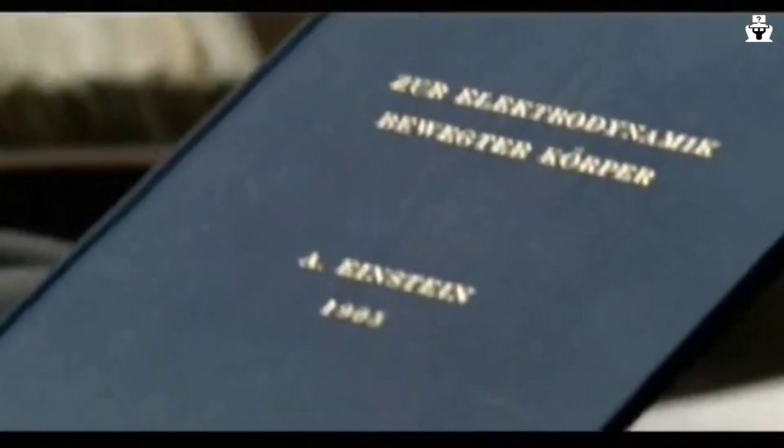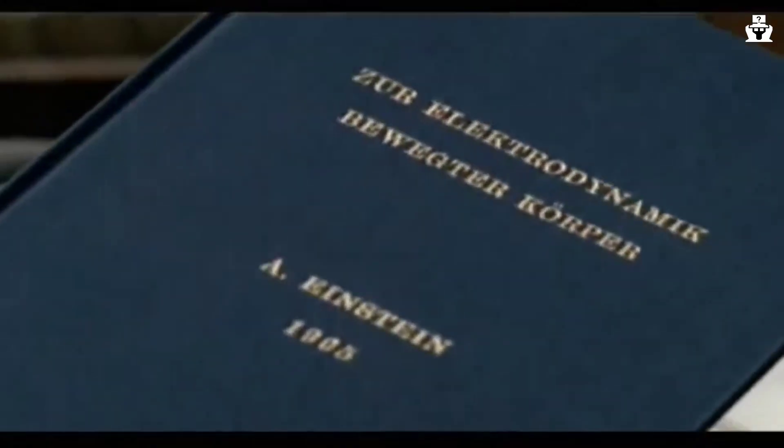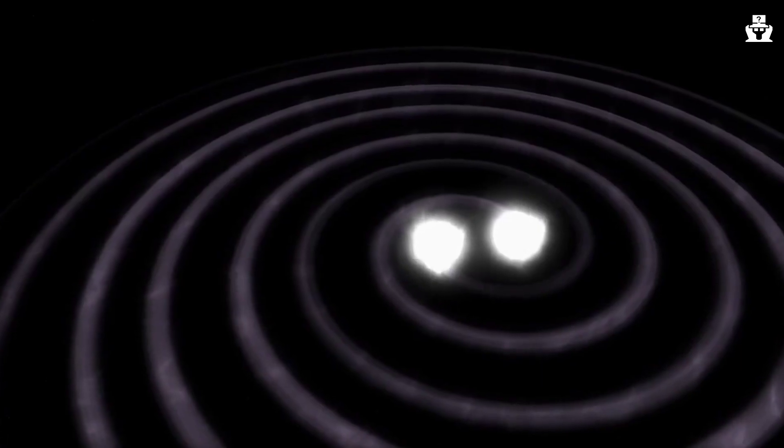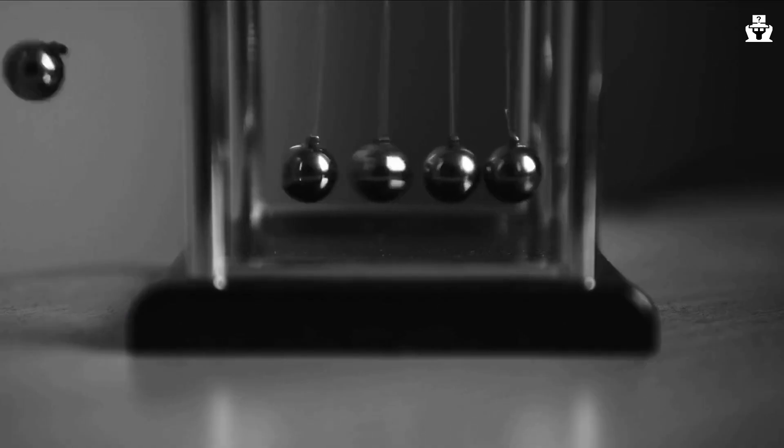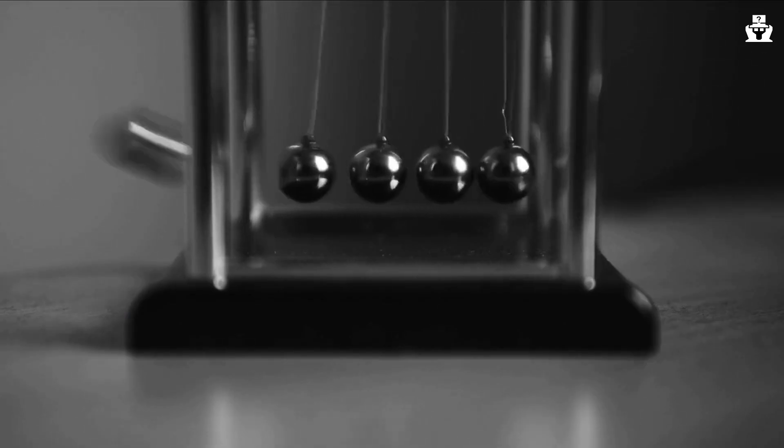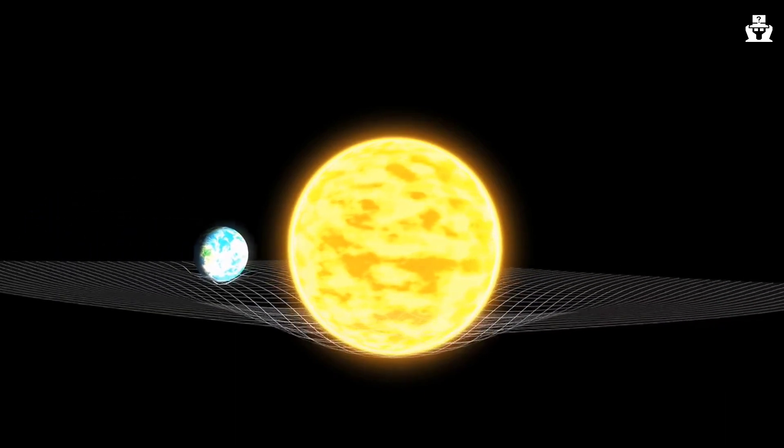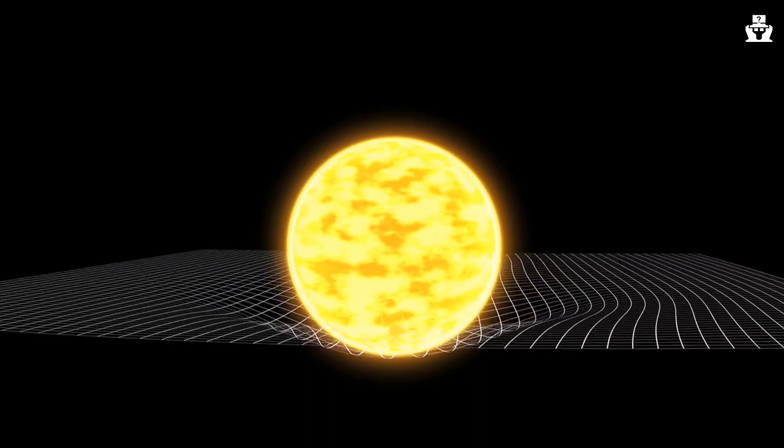Theory of General Relativity. In 1915, Einstein published his Theory of General Relativity, which proposed that gravity was not a force, as Isaac Newton had suggested, but rather a curvature in the fabric of space and time. This theory was groundbreaking and would go on to change our understanding of the universe forever.